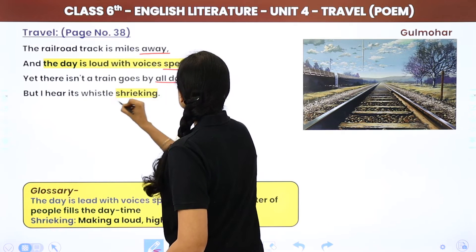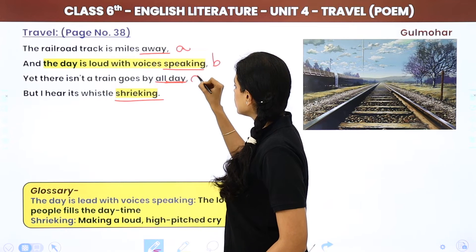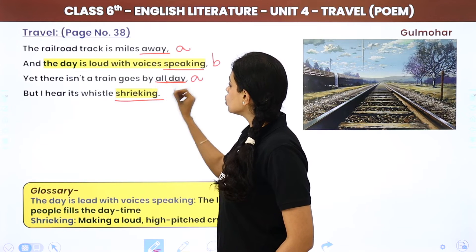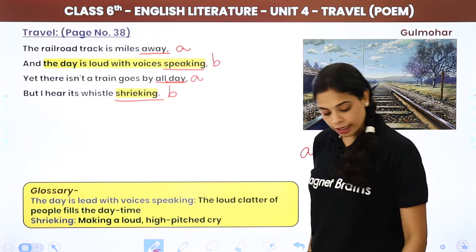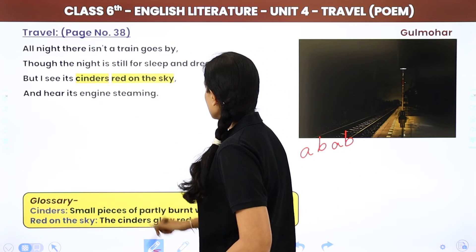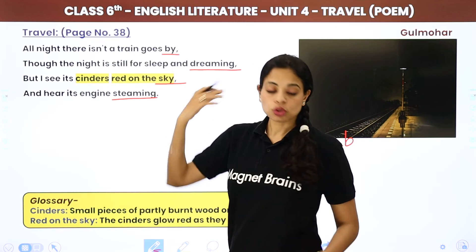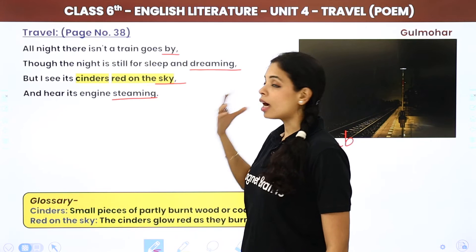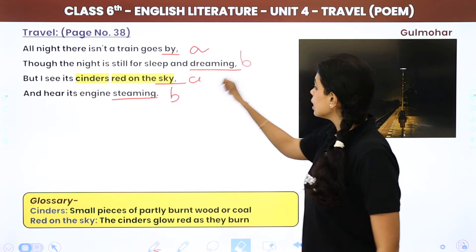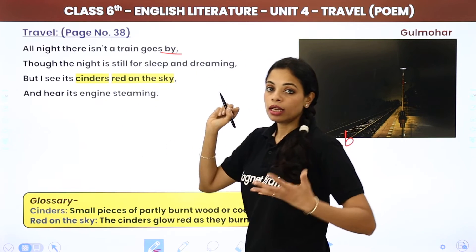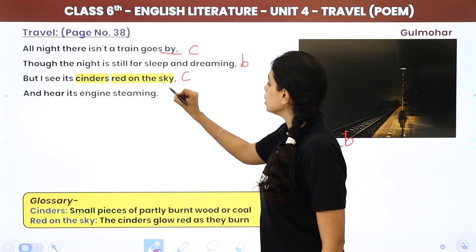To find the rhyming pattern, we underline the last words of each line. In stanza one: 'away' and 'by' — 'away' gets A; 'speaking' and 'shrieking' rhyme — they get B. So the first stanza is ABAB. In stanza two: 'by' and 'sky' rhyme — A; 'dreaming' and 'steaming' rhyme — B. Again ABAB. The full pattern across all three stanzas is ABAB, CBCB, DBDB.